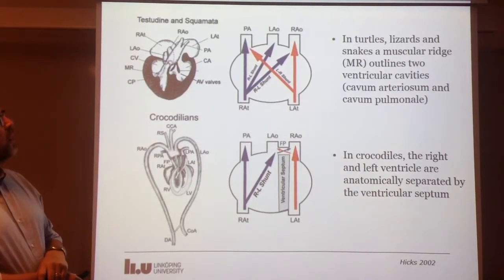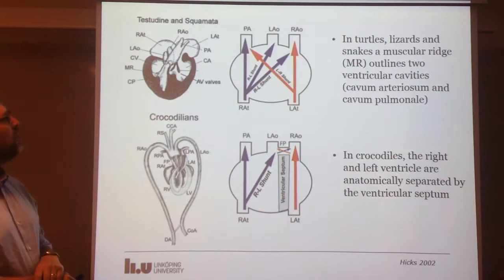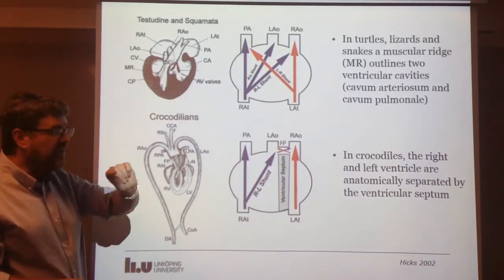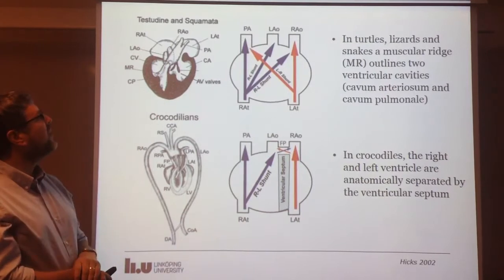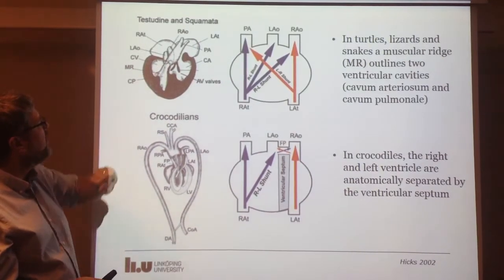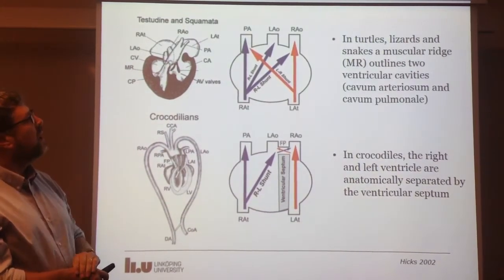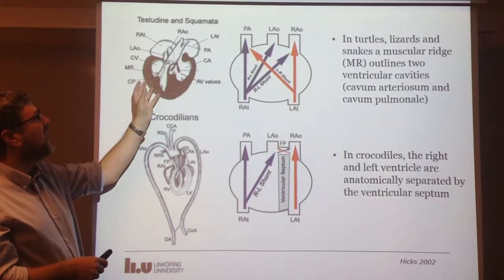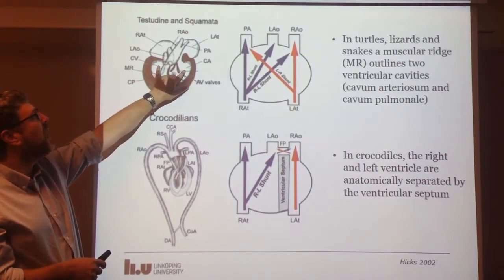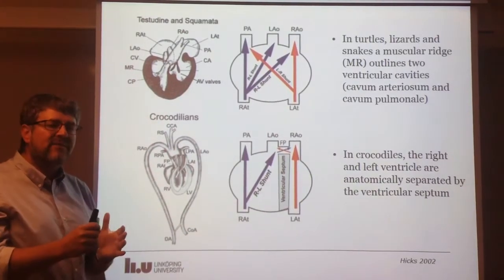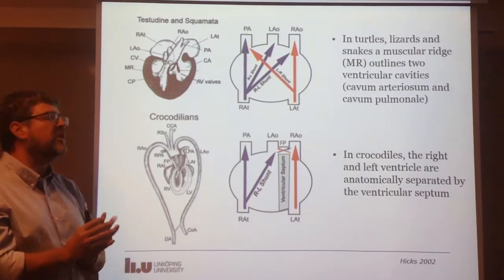Taking a closer look at the two basic systems, what we see on top is a pattern with no division of the ventricle. Nevertheless, there are two parts. This ventricle is divided into parts separated by what's called the muscular ridge, abbreviated MR. So in all turtles, lizards, and snakes, this muscular ridge is present, delineating two cava — the cavum arteriosum and the cavum pulmonale — and even described as the cavum venosum — but they are still part of a single ventricle.